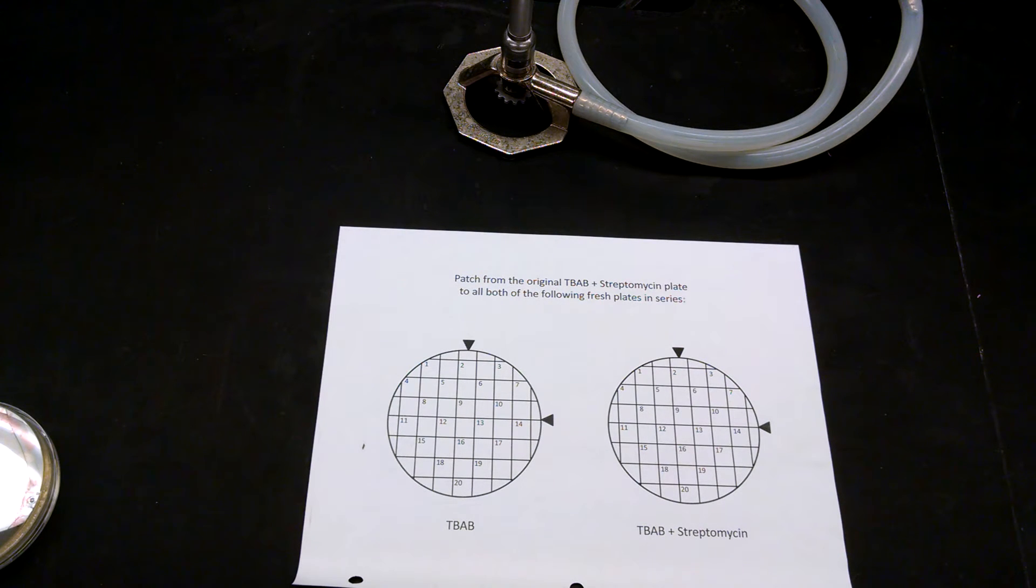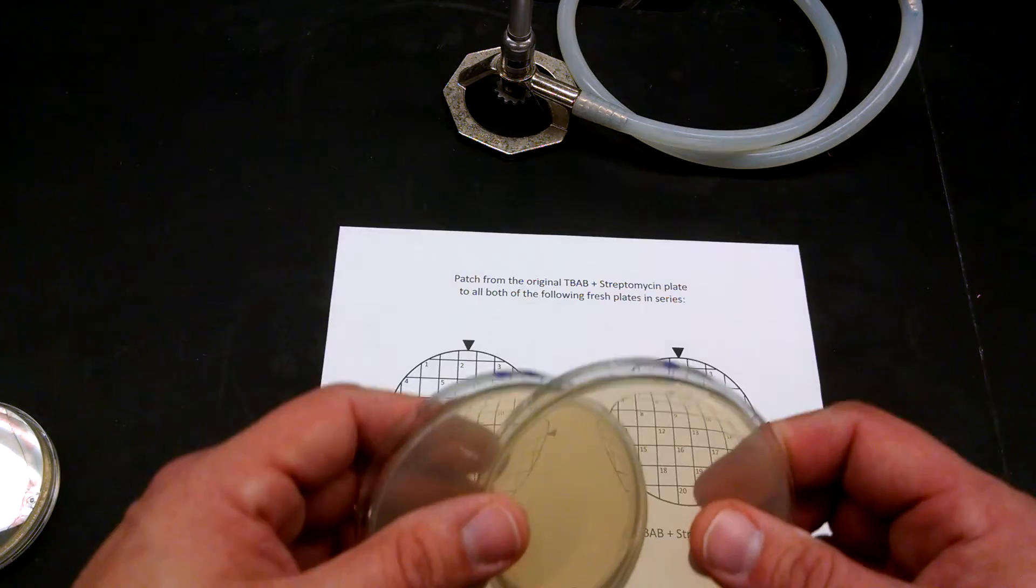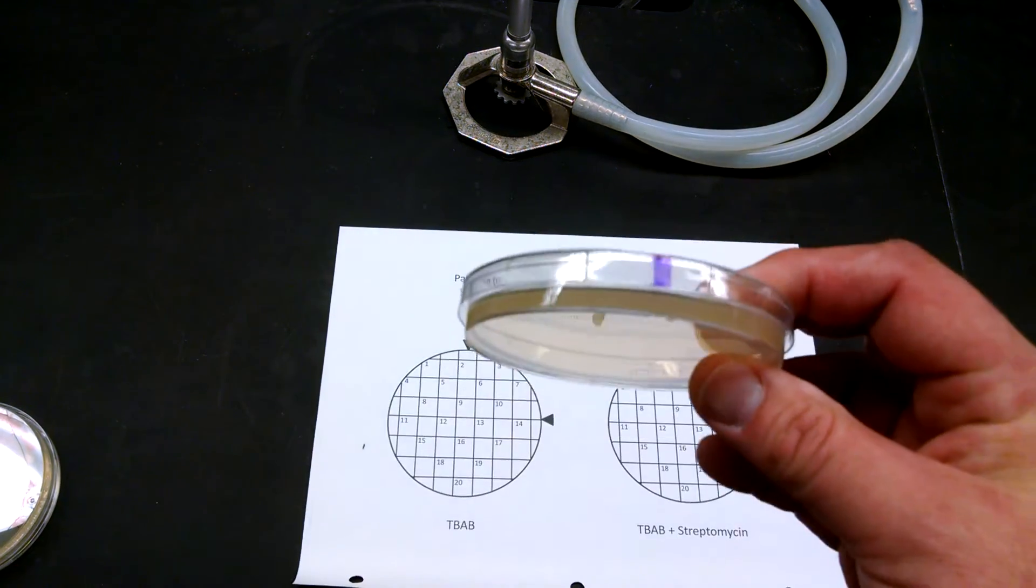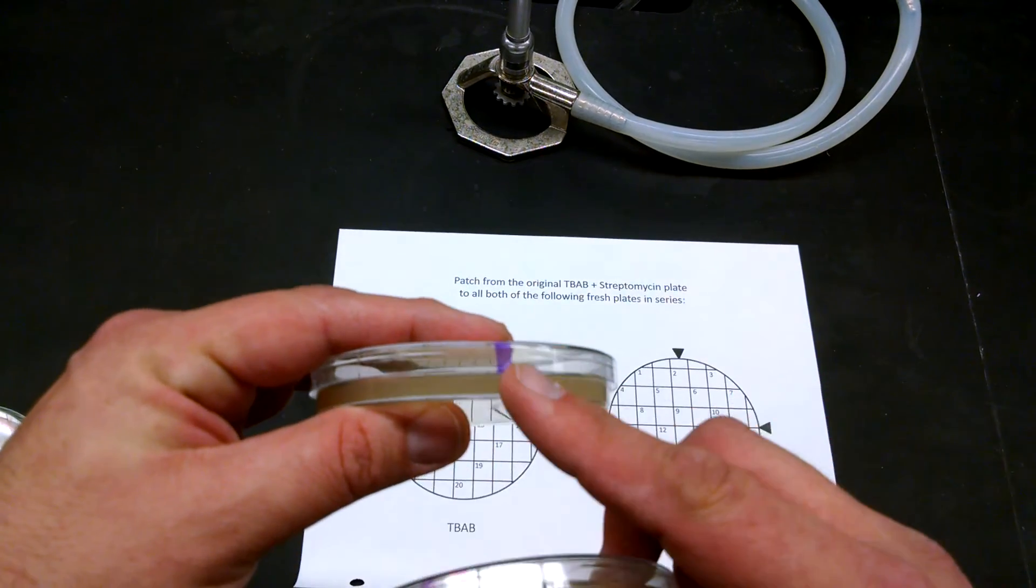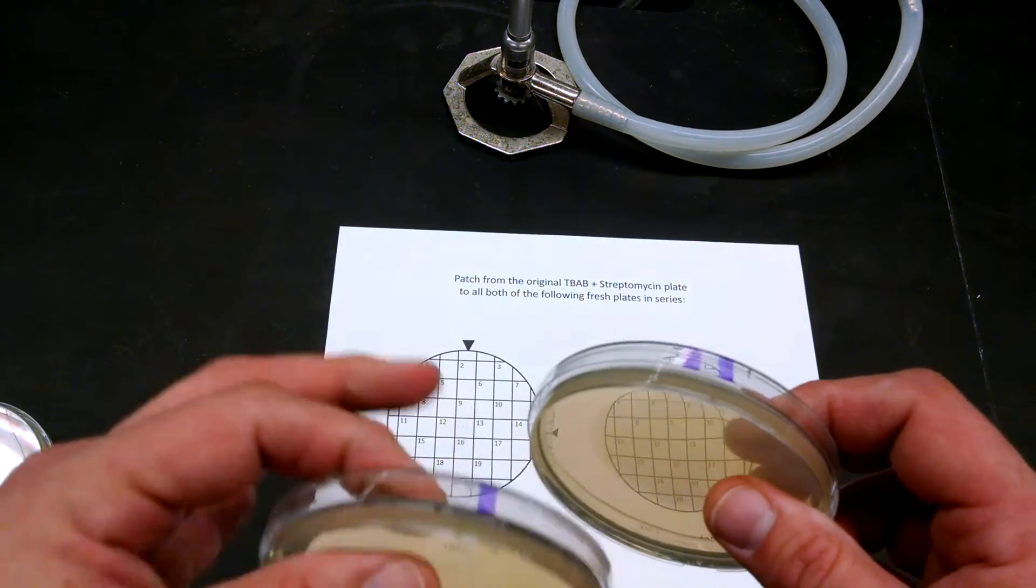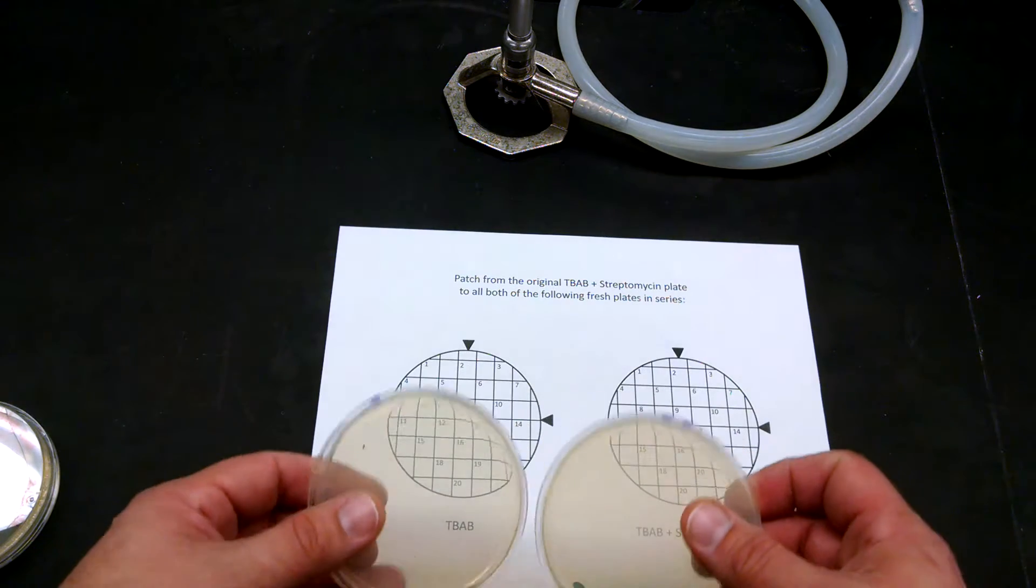You're going to need whatever plates that you want to test that have the different conditions. And so what we need is a TBAB plate and a TBAB plus streptomycin. One purple here is TBAB, two is streptomycin. But again, whatever it is that you want to test is fine.